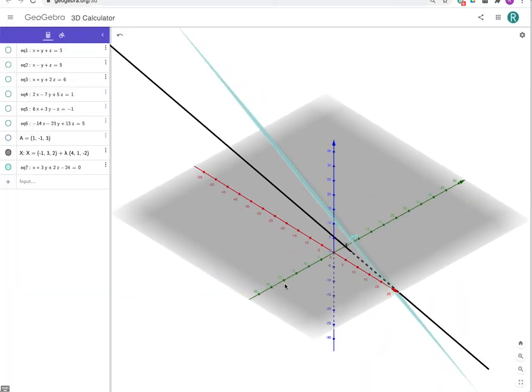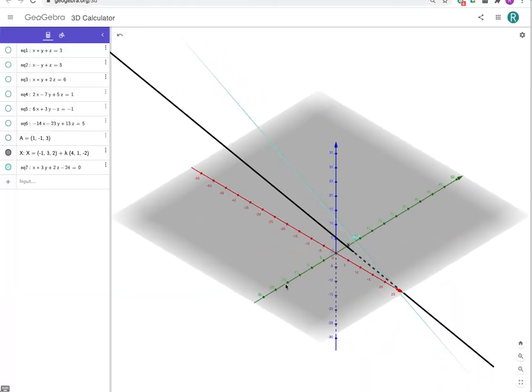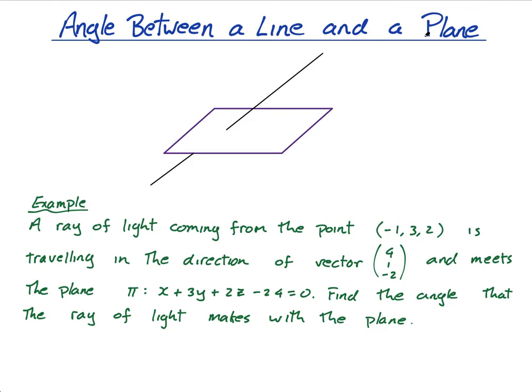So when he asks for the angle between the line and the plane, he's looking at this angle here. And of course, there's this angle too. So there's an acute angle and an obtuse angle. So just be careful what he's asking for.